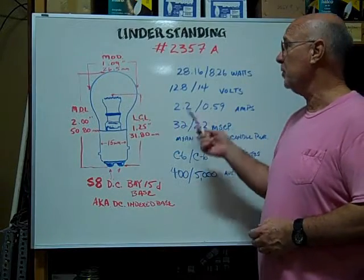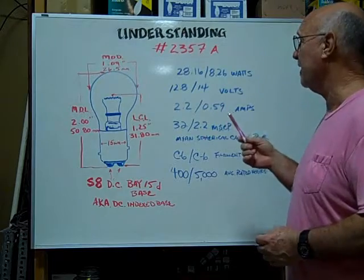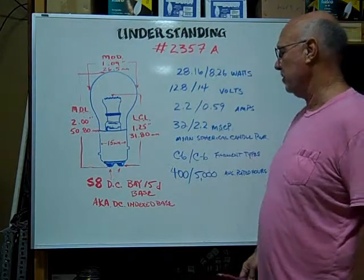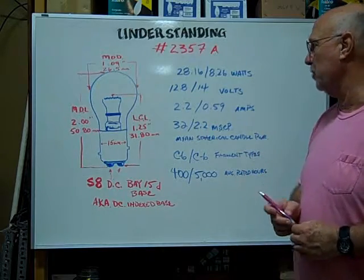Hi, here at Bulbtown we want to help you understand and identify the number 2357 AMBER BAY 15D base miniature bulb.